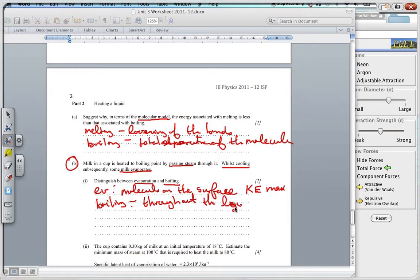And boiling takes place - sorry, my writing is atrocious with this pen - and with boiling, we have that the vapor pressure equals to the atmospheric pressure. Where, with evaporation, the vapor pressure is less than the atmospheric pressure.